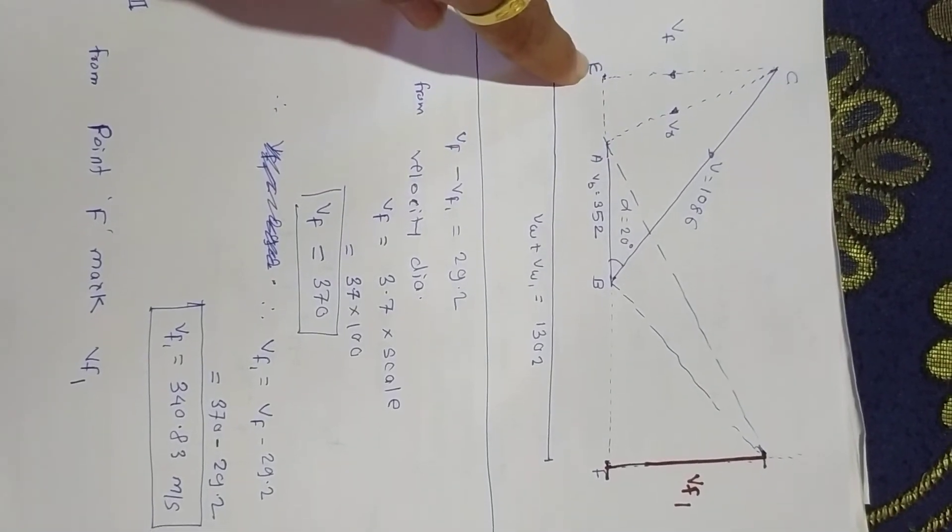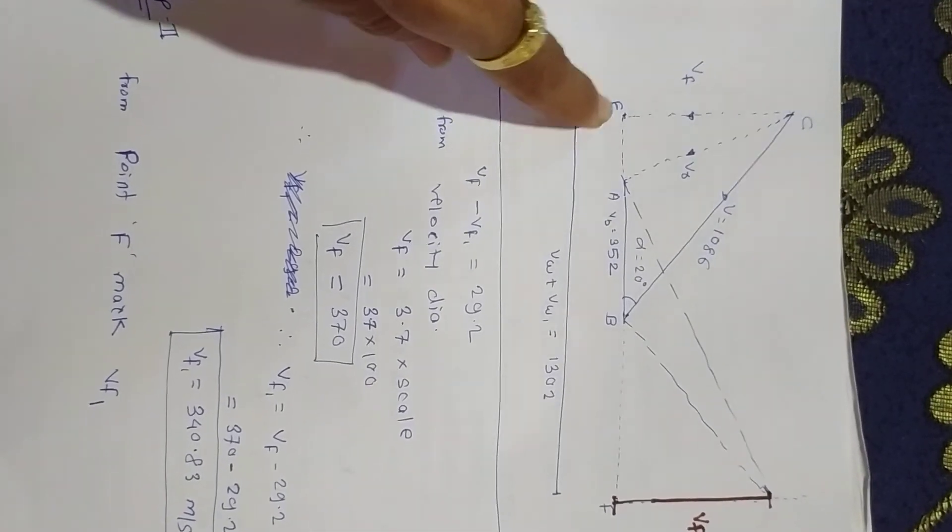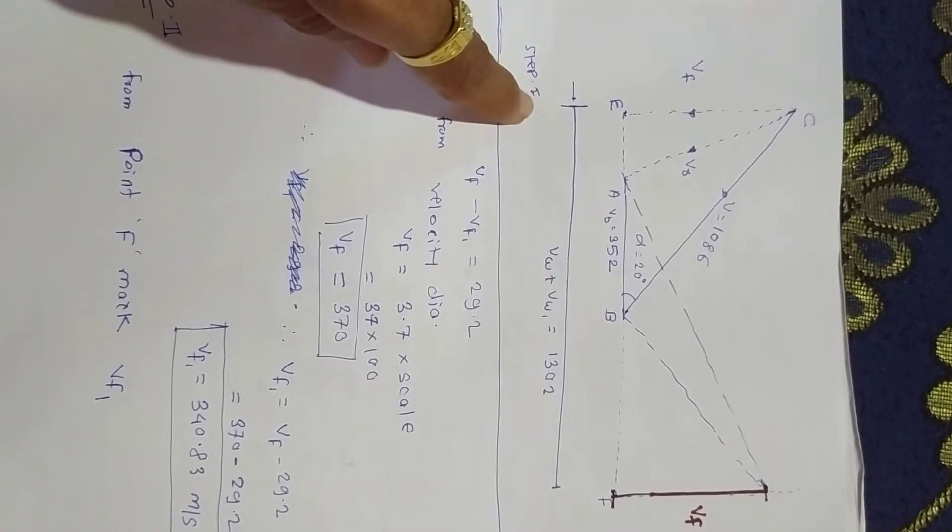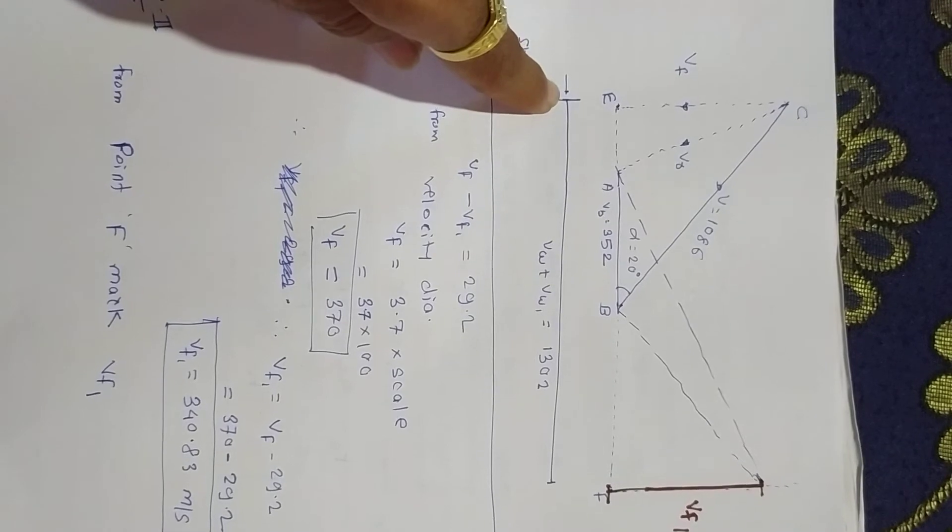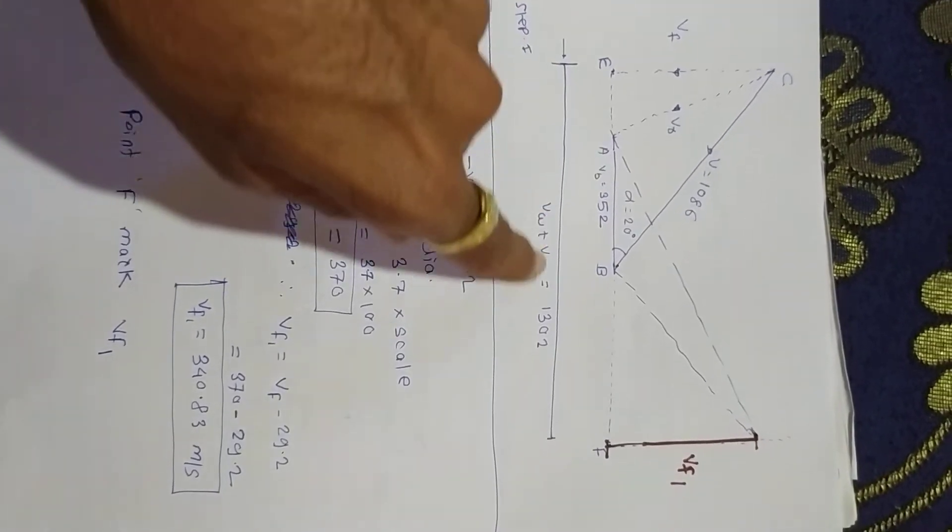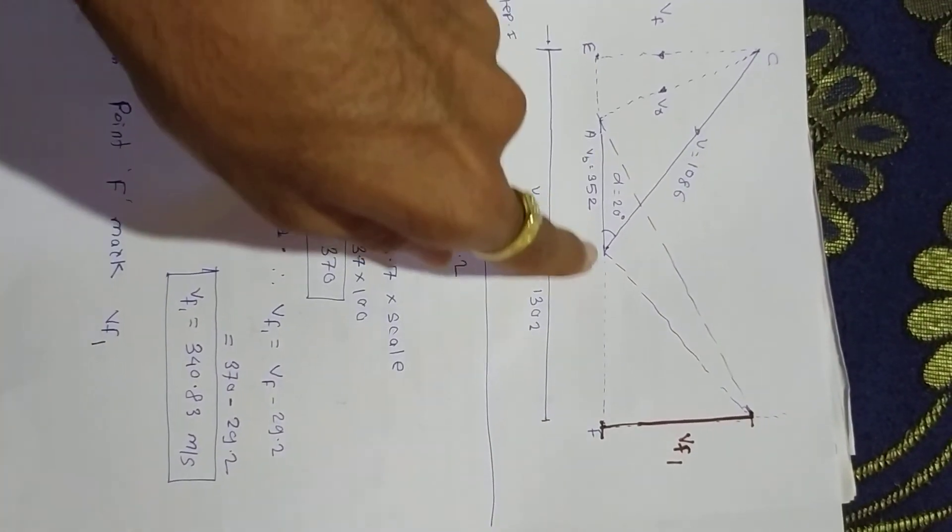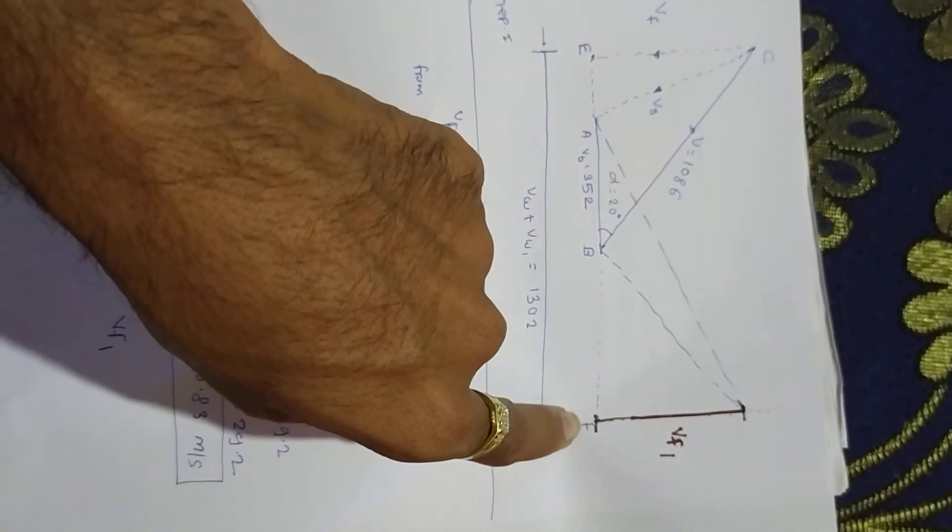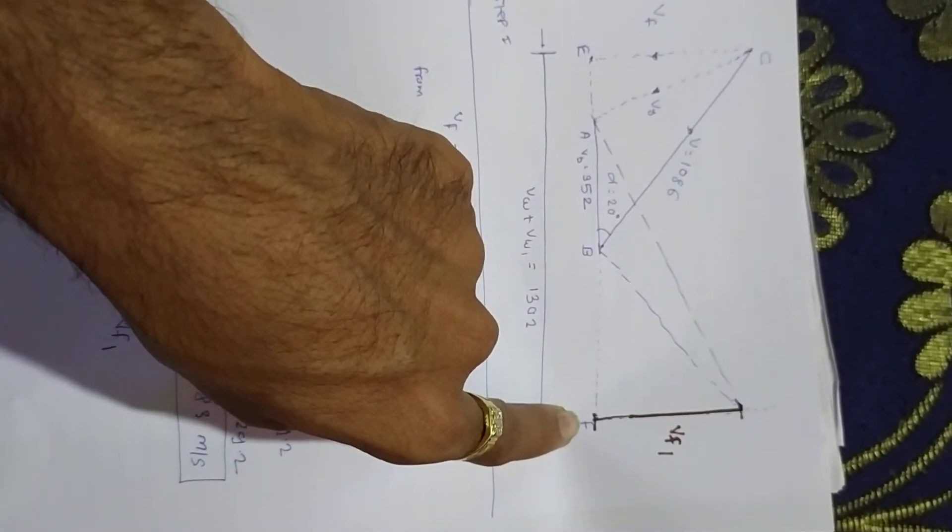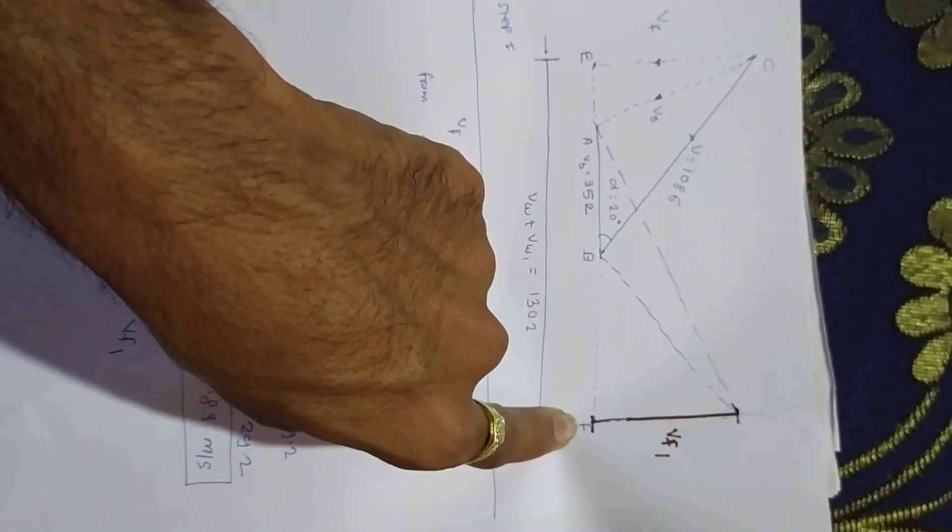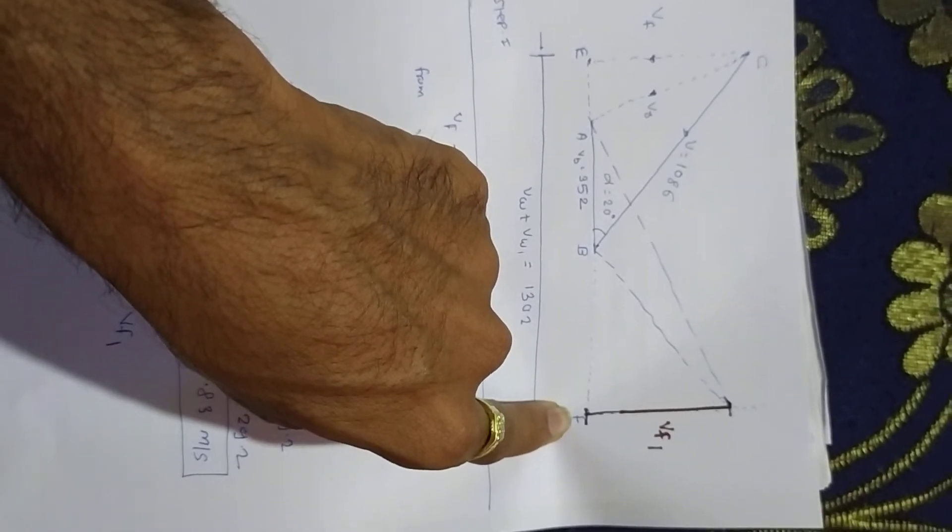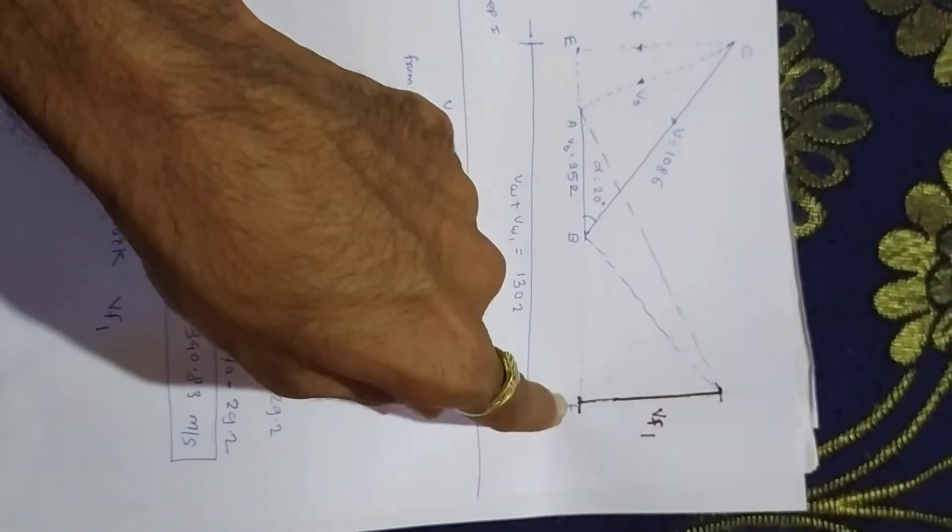A very important term: we now know total whirl. So from point E make a total whirl velocity line, and the value EF. At point F we get EF as the total whirl. Now from point F, the axial flow outlet is always perpendicular, so make a perpendicular line.